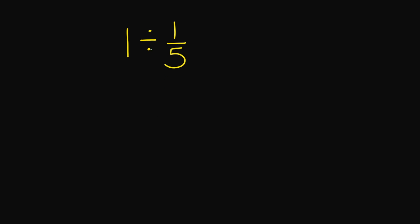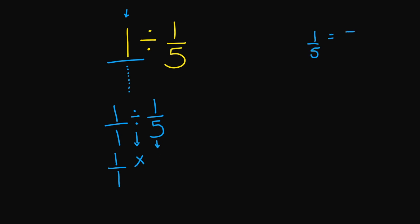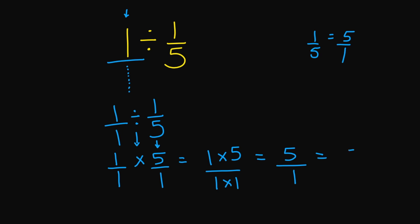Let's look at one divided by one over five. First, we turn the whole number one into a fraction: one over one, because we have an imaginary one underneath. So we have one over one divided by one over five. One over one stays the same. Division turns into multiplication, and the reciprocal of one over five is five over one. Multiply across: one times five in the numerator, one times one in the denominator. One times five is five, one times one is one. So your final answer is five.